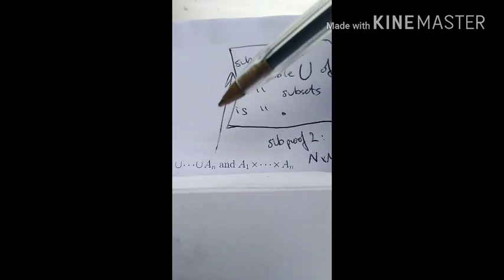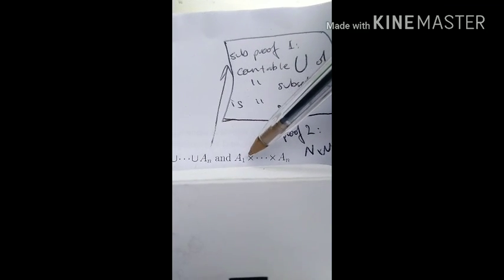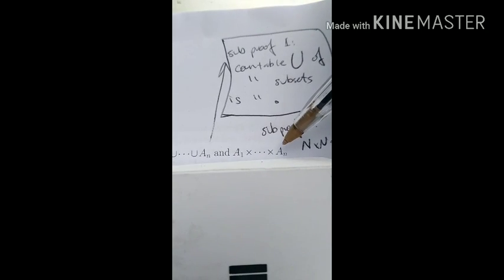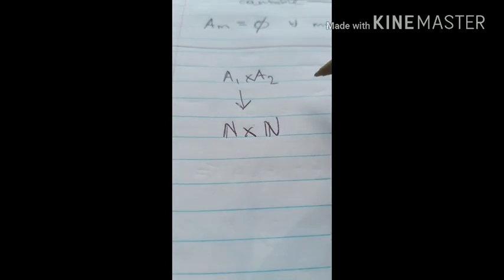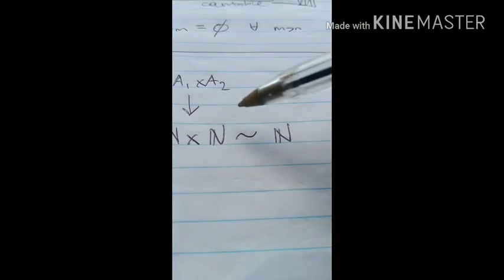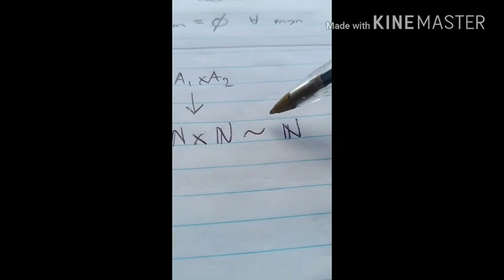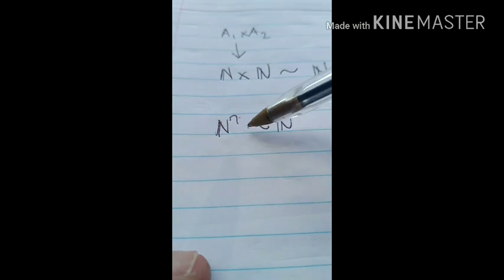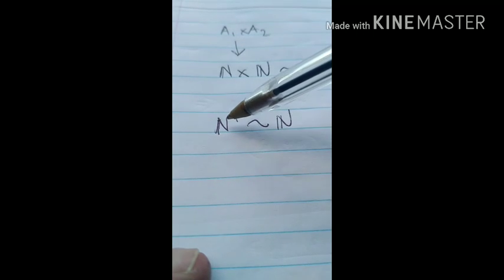Now we're going to show that the Cartesian product — countable set multiplied by countable set, multiplied by the next, and so on — is also countable. This requires multi-dimensions. If we have one set times another, that's like saying each is comparable to N, so it's N×N, and we want to show that is equinumerous with just N. We want to show this all the way up to any given n — not just two dimensions, but three, four, five, six dimensions. In other words, N to the nth dimension is equinumerous to N.